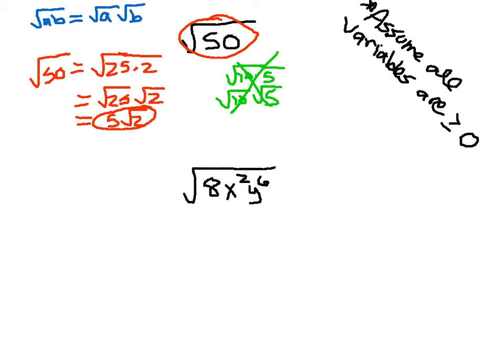This next example has the square root of 8 times x squared times y to the 6th. When you see this, assume all variables are positive, or greater than or equal to 0. That allows us, instead of taking the square root and having to worry about the absolute value, to not worry about it. When we take the square root of x squared or y to the 6th, they will result in positive numbers.